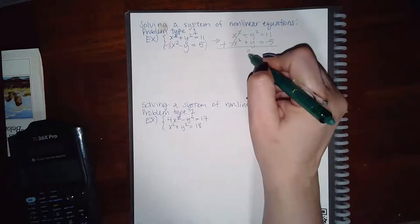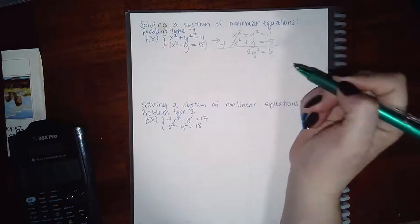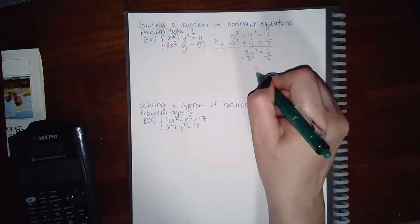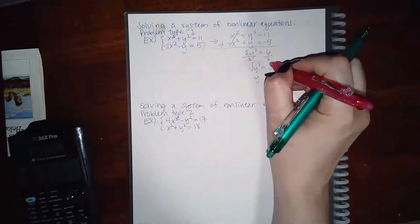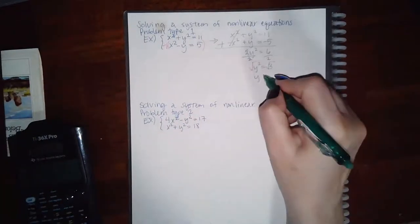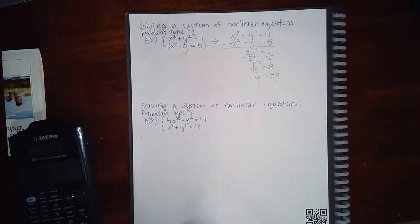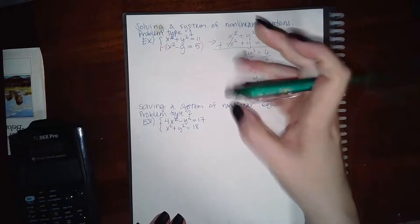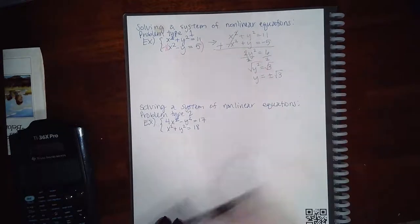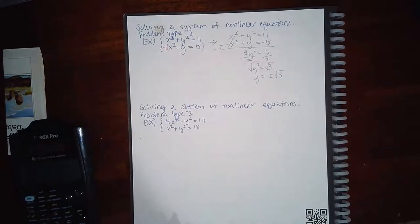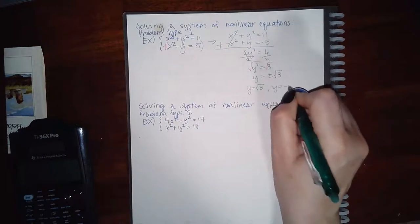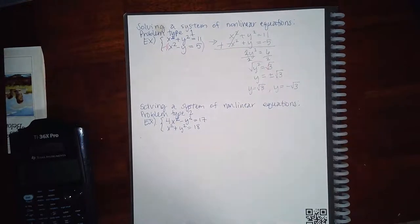Adding the equations together, those x² terms eliminate. I get 2y² equal to 6, and I can solve for y by dividing both sides by 2, then taking the square root on both sides. When we take the square root we automatically get plus or minus, so y equals positive square root of 3 and y equals negative square root of 3.